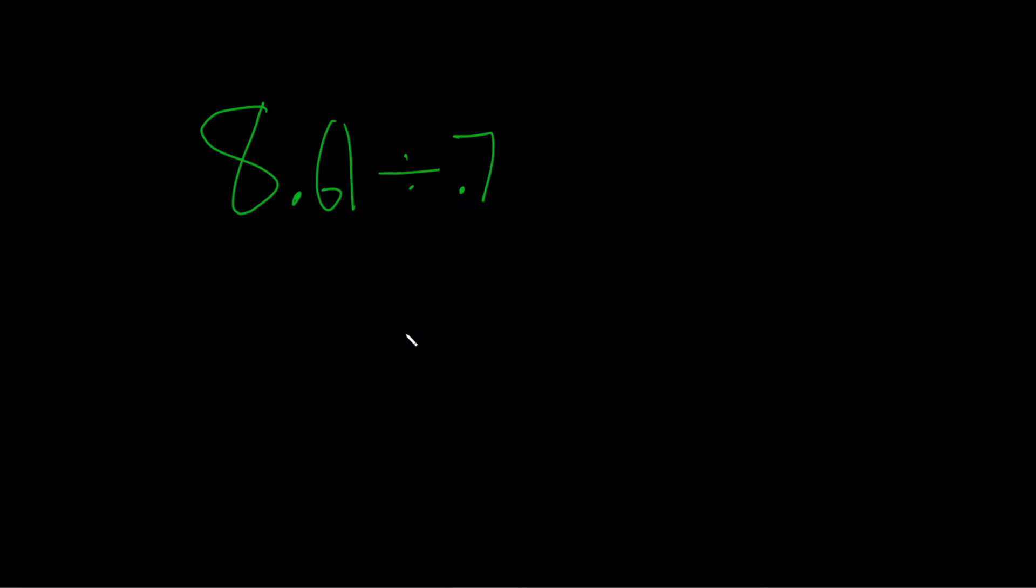In this problem, we're going to divide these decimals. So the very first step is to take the decimal here and move it over here to make the 0.7 a whole number.